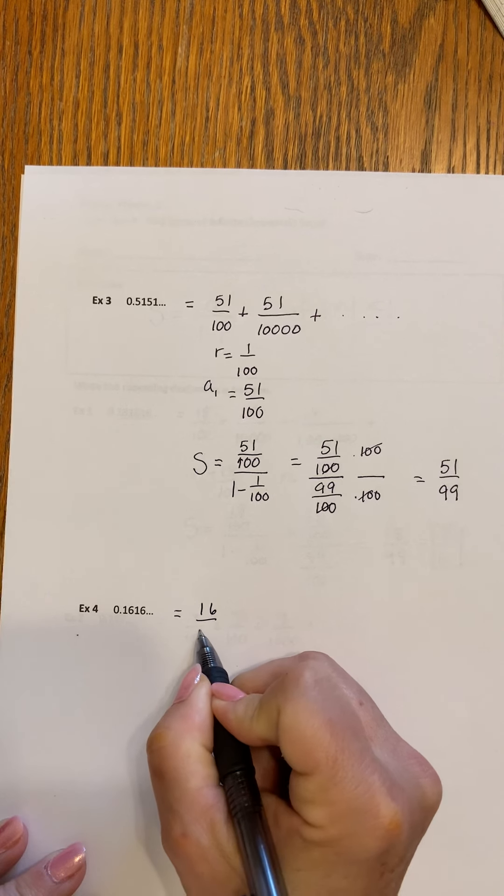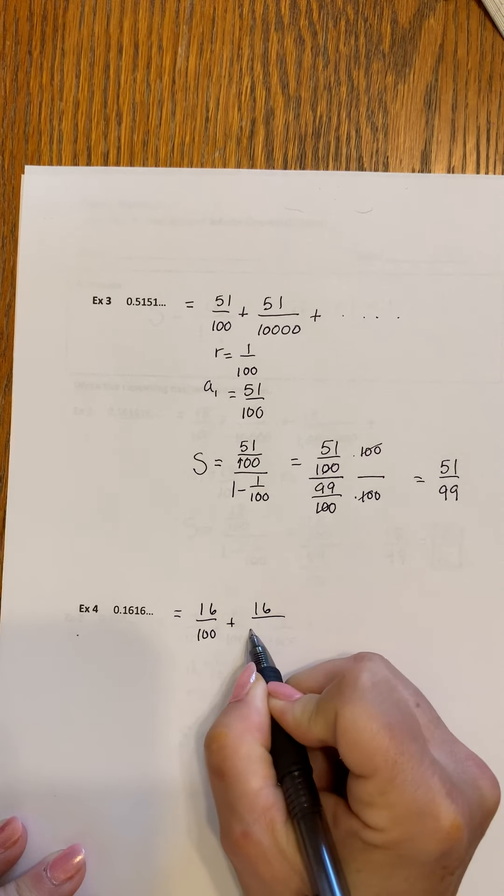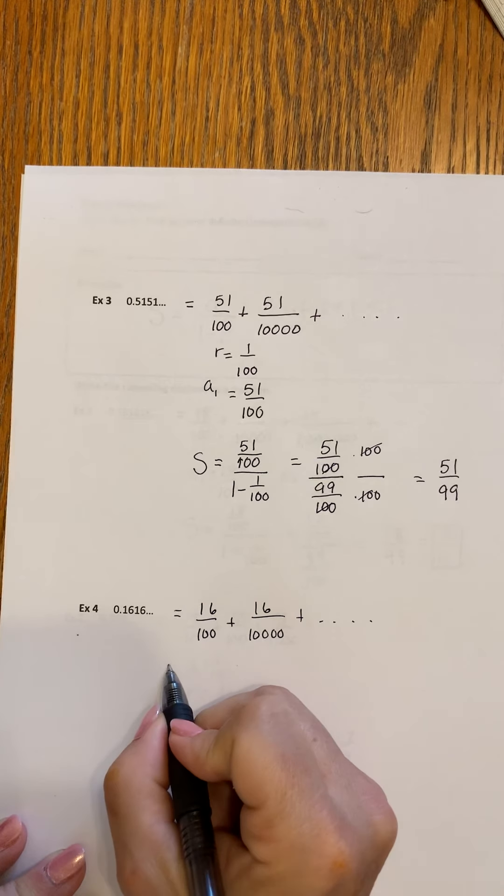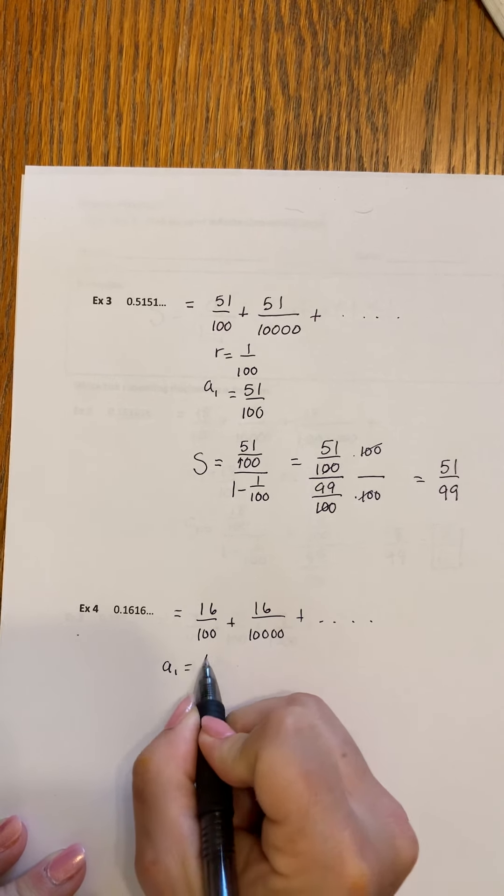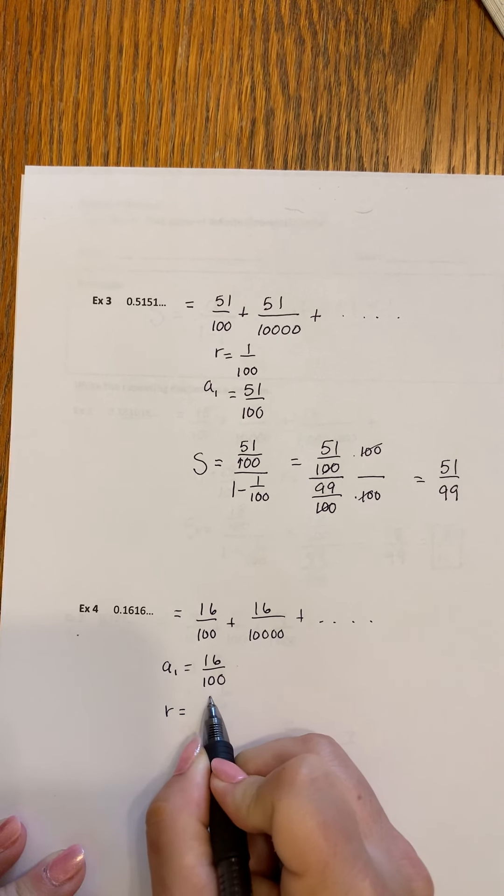This is going to be very similar to this one. It's going to be 16 over 100, 16 over 100 plus 16 over 10,000 plus going on forever and ever. Our first term is 16 over 100 and our ratio is 1 over 100.